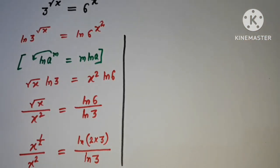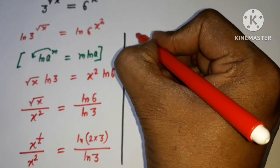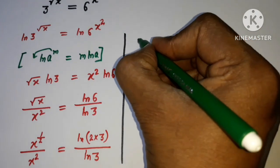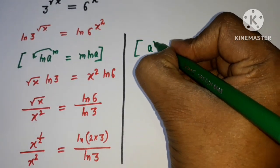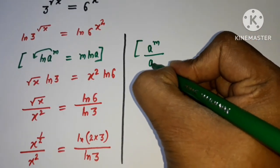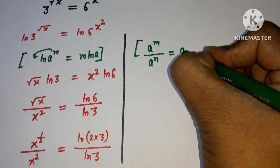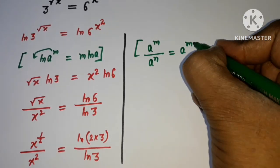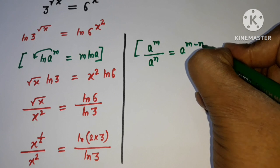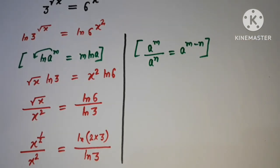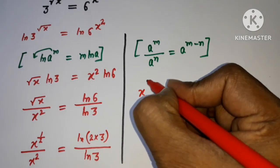I'm using the formula: a to the power m divided by a to the power n equals a to the power (m minus n). So these powers are going to subtract, keeping the base.